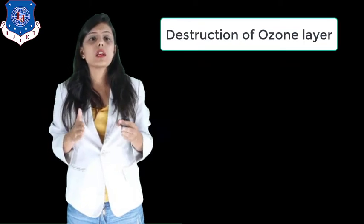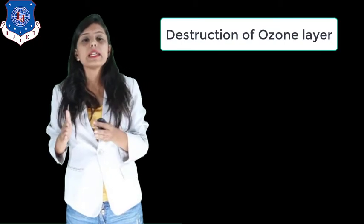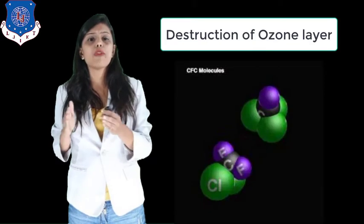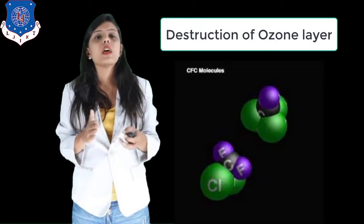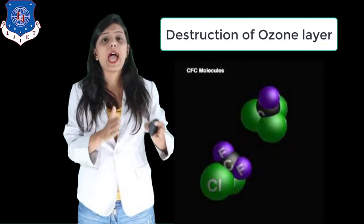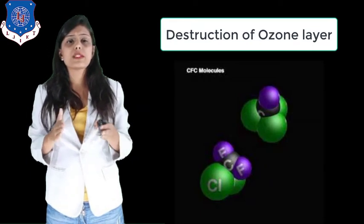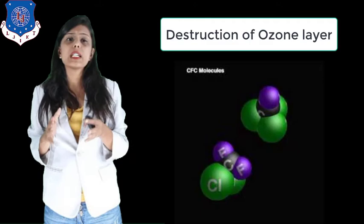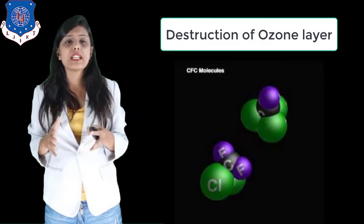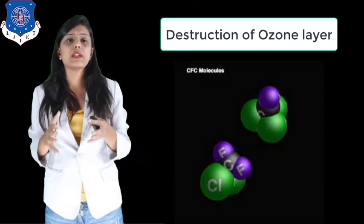Now let us discuss destruction of the ozone layer. The ozone layer is mostly destructed by CFC, which is chlorofluorocarbon. CFCs are chemicals which are combinations of carbon, hydrogen, and fluorine. CFC-11 and CFC-12 are mostly destroying the ozone layer, in which CFC-11 is trichlorofluoromethane, which is very dangerous.